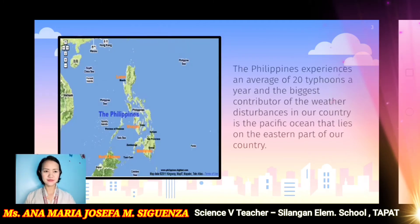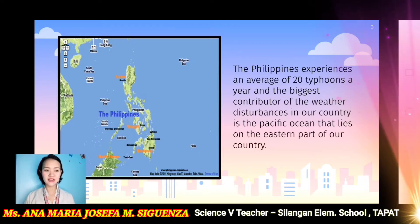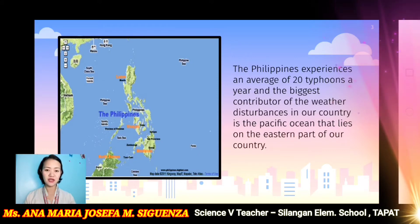The Philippines experiences an average of 20 typhoons a year, and the biggest contributor of the weather disturbances in our country is the Pacific Ocean that lies on the eastern part of our country. Typhoon is just one of the few weather disturbances that we experience, and that is what we are going to discuss for today.